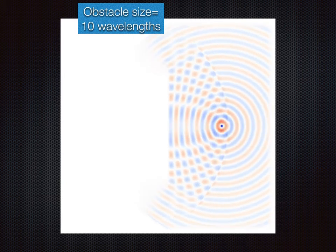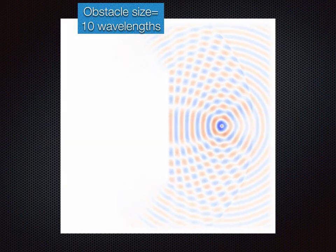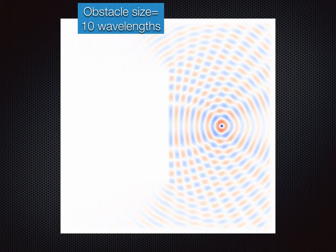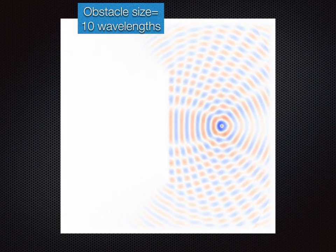Finally, with a large obstacle of 10 wavelengths, there is no diffraction and we also observe interference between incident and reflected waves. This is the third regime of wave scattering and you can observe a distinct shadow region and linear propagation of the wave.